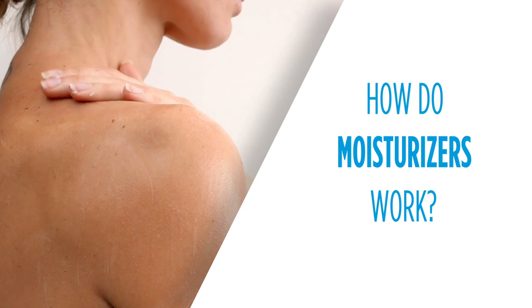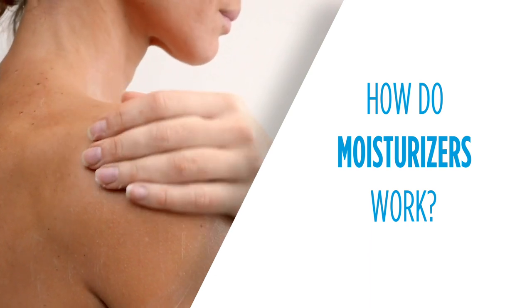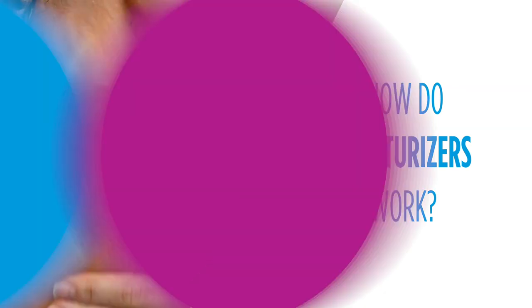The first thing a moisturizer does when you put it on is — all moisturizers contain some oily substance, and that oily substance prevents water from evaporating from your skin.